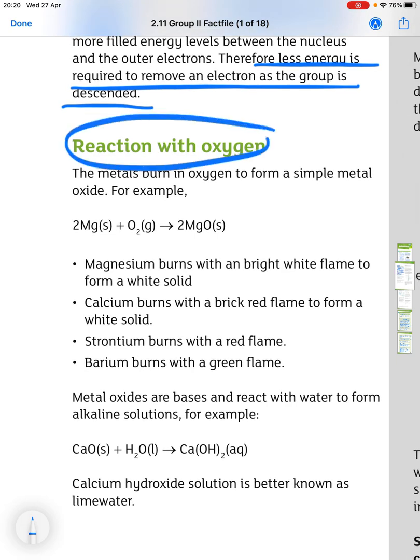Next, we consider the reaction with oxygen for the metals. So they burn in oxygen to form a simple metal oxide, such as magnesium here, plus oxygen gives us magnesium oxide.